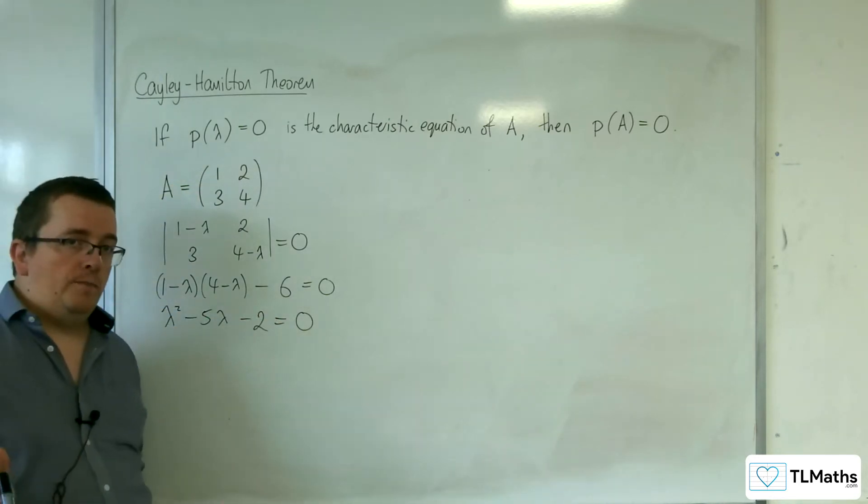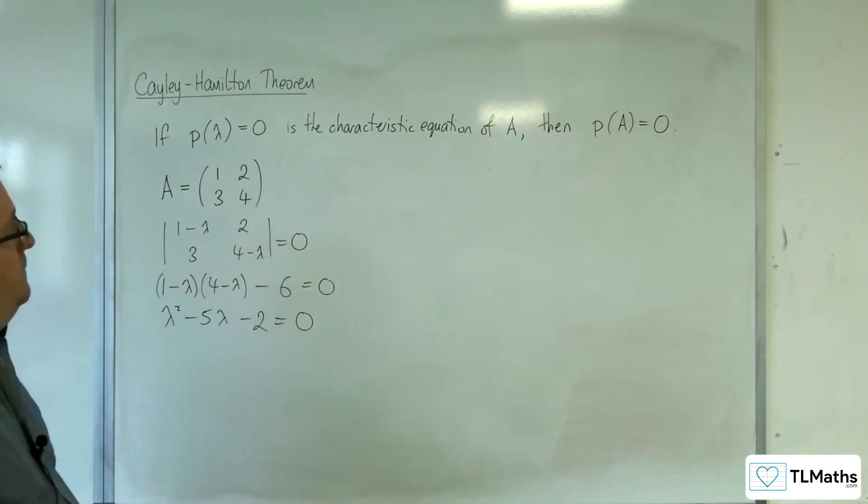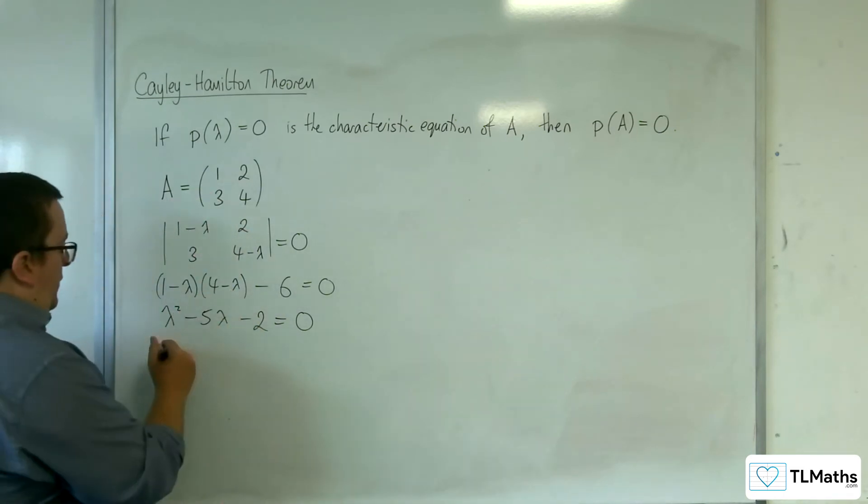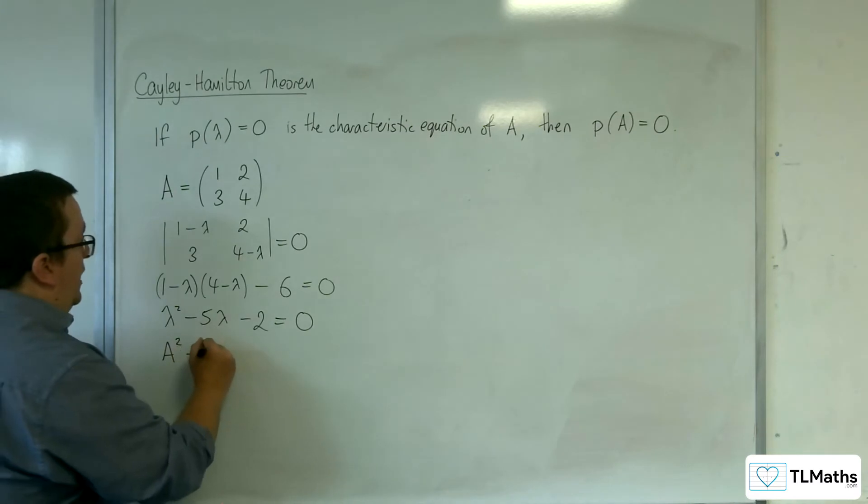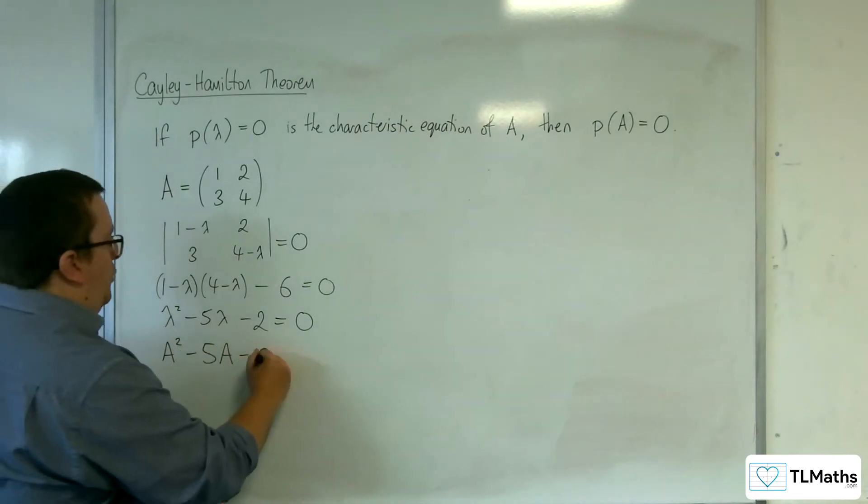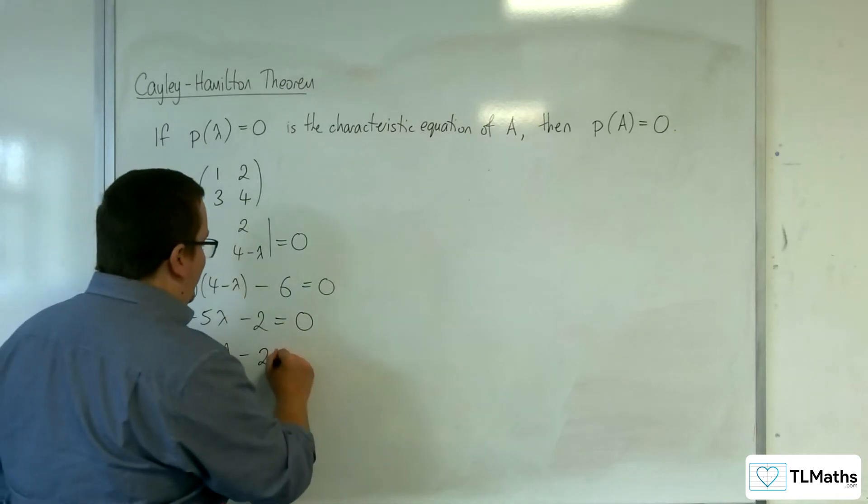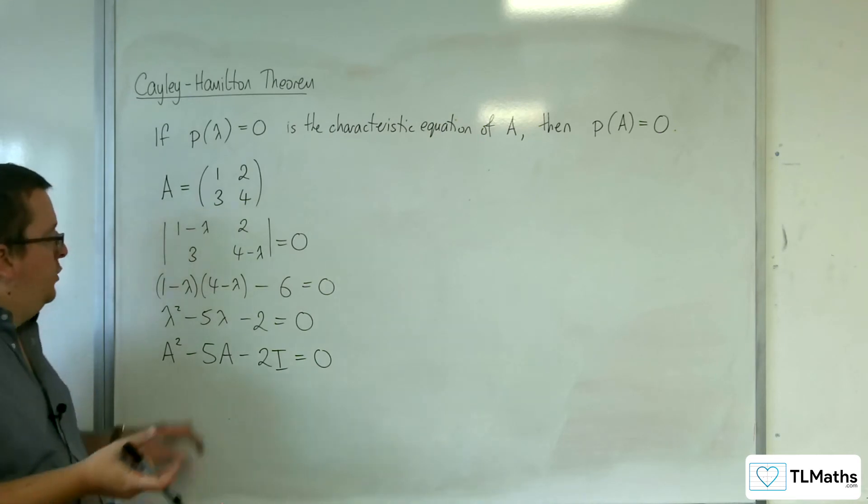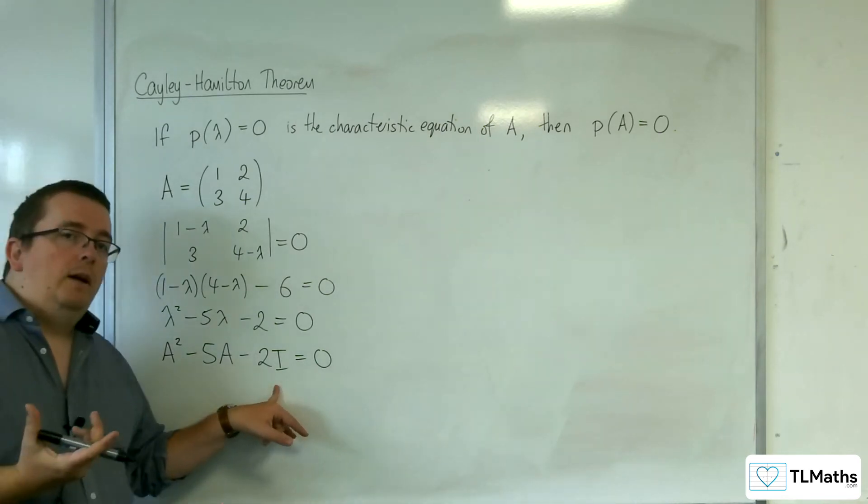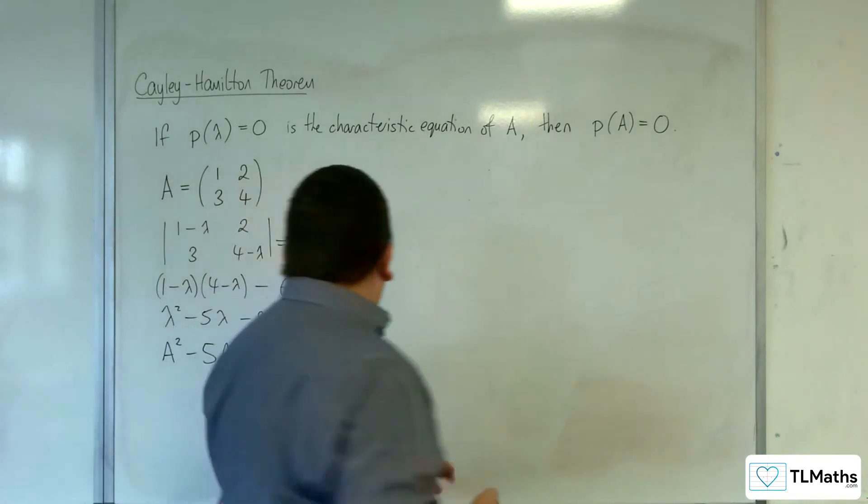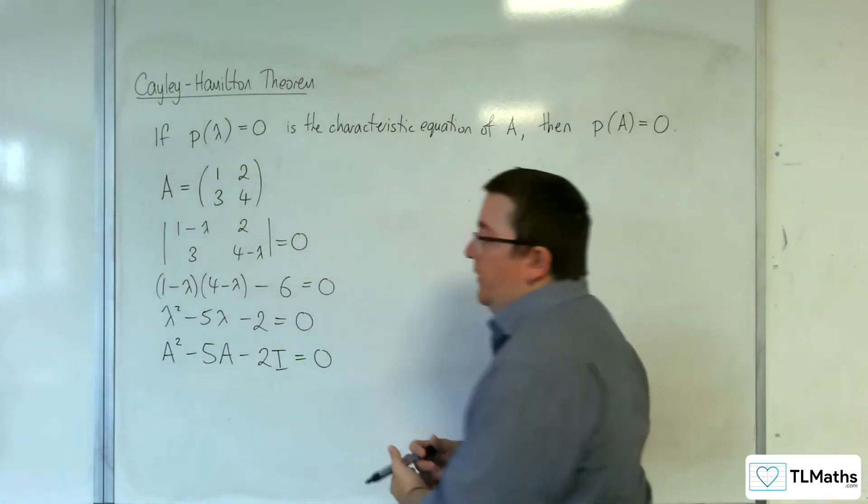Now what I'm saying then is that by the Cayley-Hamilton theorem, it is the case that A squared take away 5A take away 2 times, well, not 2, 2 times the identity is going to be equal to 0. Because you can't have a matrix take away a scalar. That's nonsensical. So what we want to show is that this is the case.